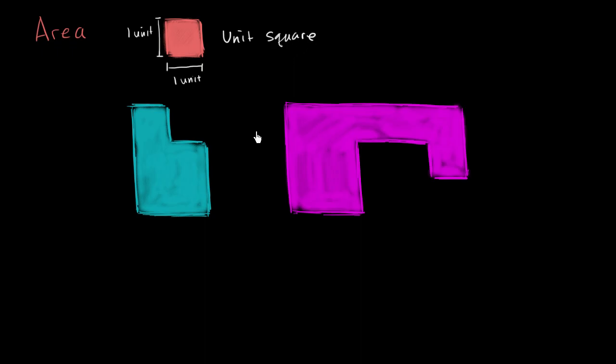And so one way to measure the area of these figures is to figure out how many unit squares I could cover this thing with without overlapping and while staying in the boundaries. So let's try to do that. Let's try to cover each of these with unit squares, and essentially we'll have a measure of area.